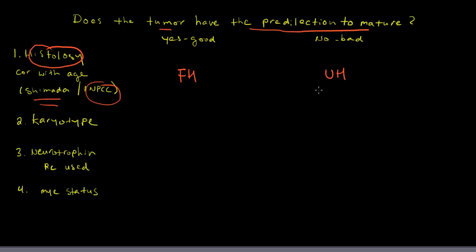If your algorithm gives you an unfavorable histology, then the tumor is felt to not have the predilection to mature biologically. And it turns out that there's many other parameters that seem to correlate with this. So for example, the tumor that have the predilection to mature tend to have a karyotype that's very aneuploid. In other words, the chromosome numbers are quite wrong. And they could be triploid or tetraploid. And these are actually good.